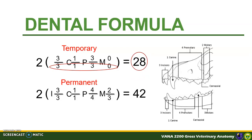Here is the temporary and the permanent dental formula of dog. A puppy will have a total of 28 temporary teeth, and later this will be replaced by 42 permanent teeth. Take note that among the four types of teeth, the molar teeth do not have a temporary counterpart.